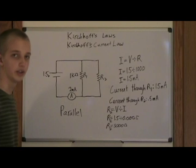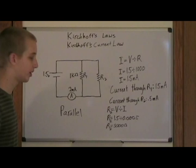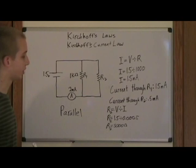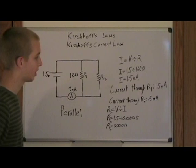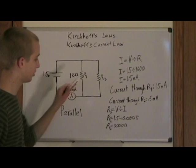Here's a practical implementation of Kirchhoff's Current Law in a parallel circuit. We have a 1.5 volt battery, and we know the current going through the entire circuit is 2 milliamps, and the value of R1 is 1 kilohm. Using Ohm's Law, we can determine that the current going through R1 is 1.5 milliamps. Then, according to Kirchhoff's Current Law, the current going through R2 is 0.5 milliamps, because 1.5 plus 0.5 is 2 milliamps — the total current. Using Ohm's Law again, we can determine the value of R2 is 3,000 ohms, or 3 kilohms.